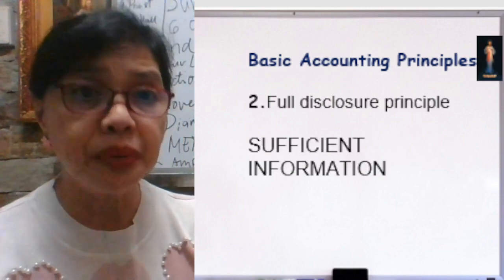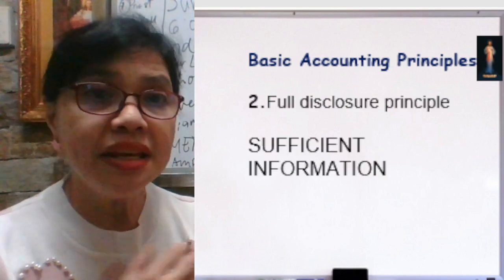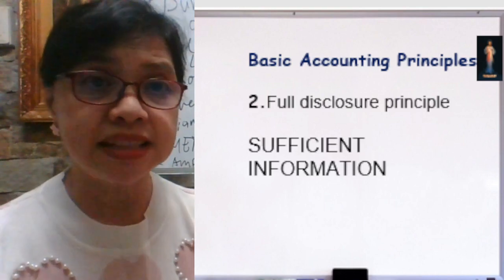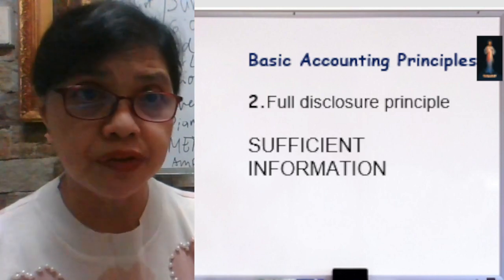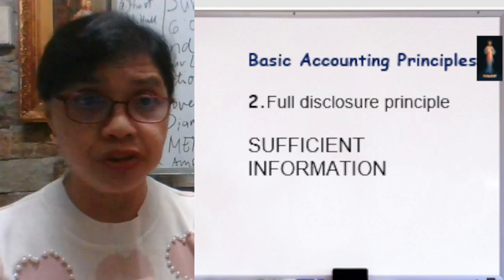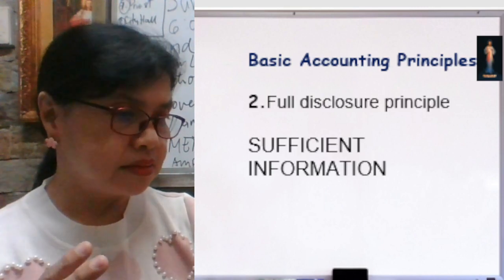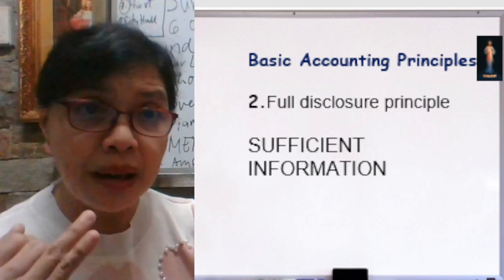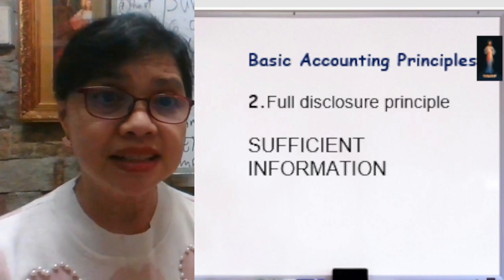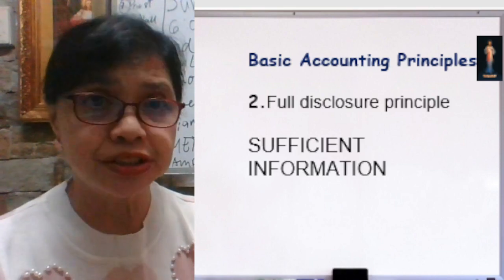Number two: the Full Disclosure Principle. This means we need to provide sufficient information in our financial statements. For example, when presenting financial statements to creditors or the government, you must disclose the accounting principles and policies you used, as well as significant amounts needed in the financial statements, because other parties who look at your financial statements may need additional information.